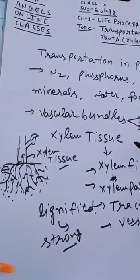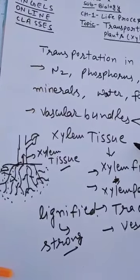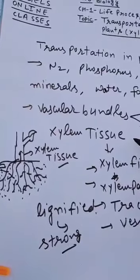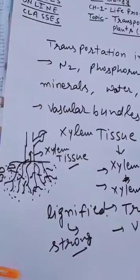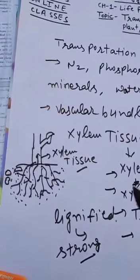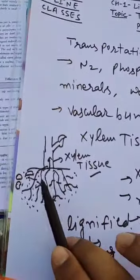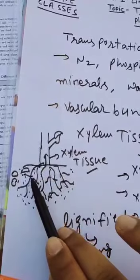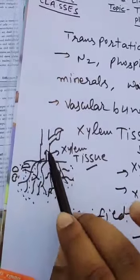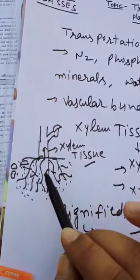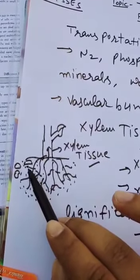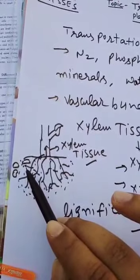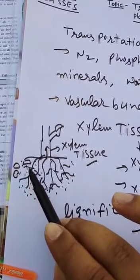Xylem tissue in the plant body transports water and minerals. Just take a look at this figure. This is a simple figure. This is the layer of ground, this is a root of the plant, this is a stem, and this is a leaf. Let's talk about root. Root hairs are present in soil particles.